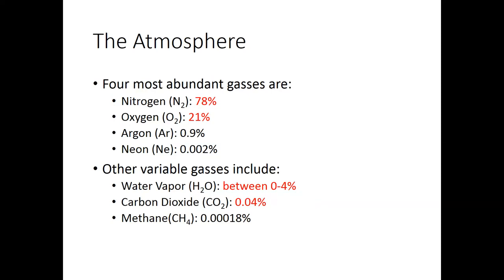So what's actually in our atmosphere? There are two types of gases: fixed gases and variable gases. Fixed gases are gases whose concentrations pretty much stay the same — they don't differ much from place to place or moment to moment. These are also the most abundant gases, making up most of what our atmosphere is. They are nitrogen, oxygen, argon, and neon.